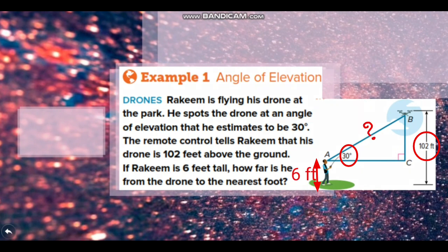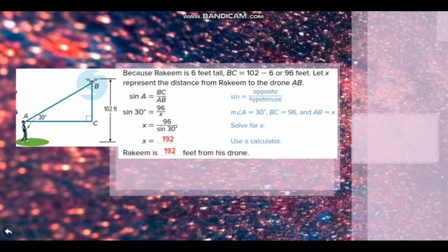This means that we need to find the hypotenuse length of this triangle. Because Rakim is 6 feet tall, this means that BC is 102 minus 6, that is 96 feet. Now let x represent the distance from Rakim to the drone AB, which is the hypotenuse length.